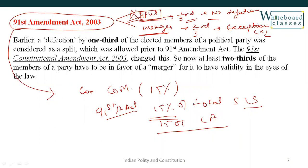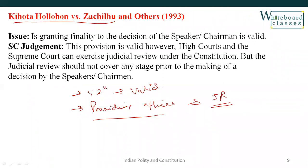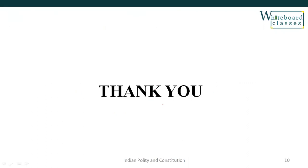The 91st Amendment Act deleted the split provision — the exception that if one-third of members split from their party they would not be considered defectors. Regarding the deciding authority, if the disqualification is on the ground of defection, the deciding authority is the presiding officer — the President in case of center and Governor in case of state do not apply here. The landmark judgment upheld the constitutional validity of the amendment, and the presiding officer's decision comes under judicial review. Thank you so much for watching — please subscribe to my channel.